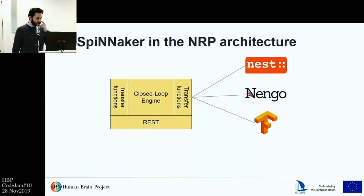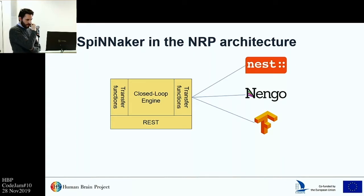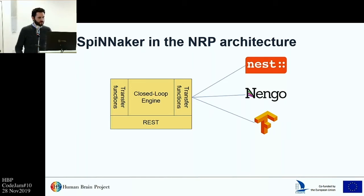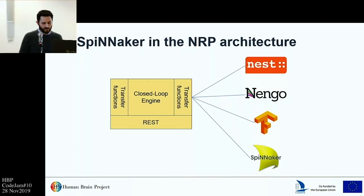From the neural side, the transfer function attaches to the neural simulator. The current architecture of the platform allows only a single neural simulator at a time — you can select which one you want, whether NEST, NEN, or TensorFlow — but only one at a time. The closed-loop engine will synchronize only one simulator and one brain model at a time. In our work, what we did is add another simulator option: Spinnaker. So you can now choose Spinnaker as a neural backend for your closed-loop simulations.